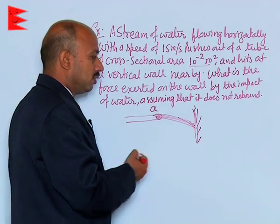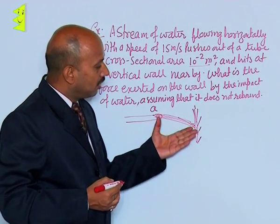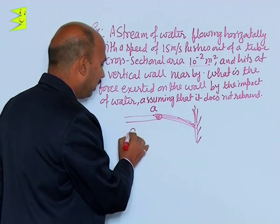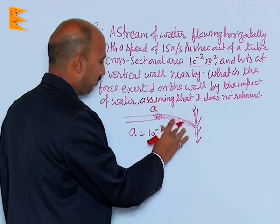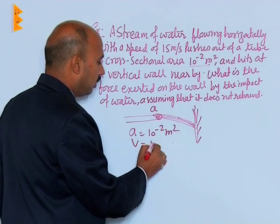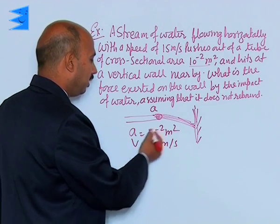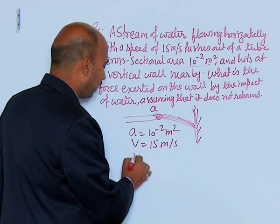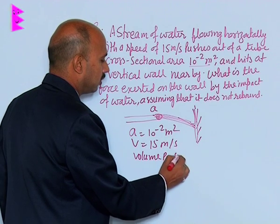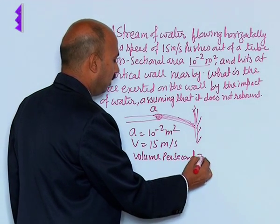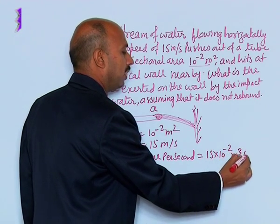First we have to calculate the mass — how much mass of water is striking this wall in one second. We know area is equal to 10 raised to power minus 2 meter square, and velocity is equal to 15 meters per second. So volume of water per second is equal to 15 into 10 raised to power minus 2 meter cube per second.